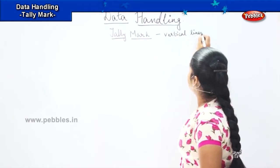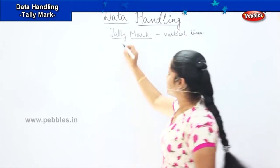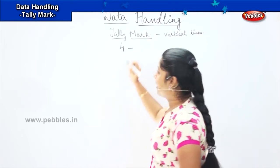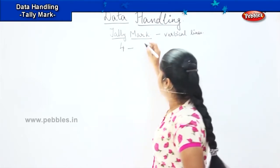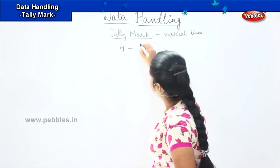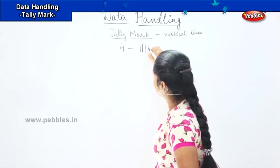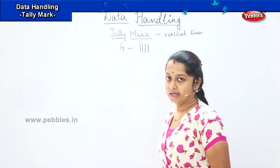For example, if I have to mark say 4, how will I represent it in tally mark? I will be drawing 4 vertical lines: 1, 2, 3, 4. Is it clear?